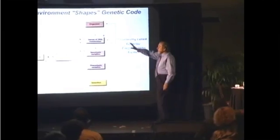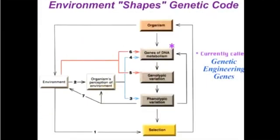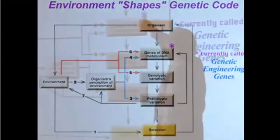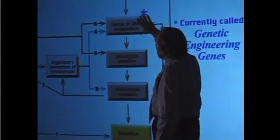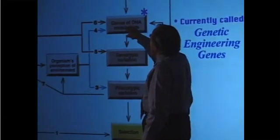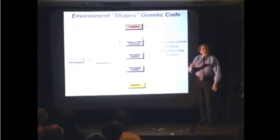We adjust our genes to fit the environment that we think we live in. Perception may be right or perception may be wrong — therefore, perception is belief. It's belief that changes your genes, your perception that changes your genes. This chart from Science covers Cairns' work on genetic change. There is now a new name for genes of DNA metabolism — they are now called genetic engineering genes.